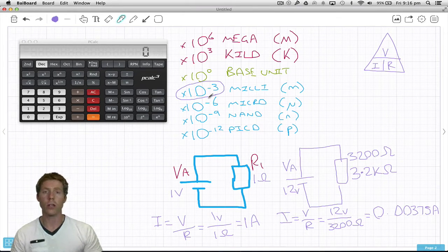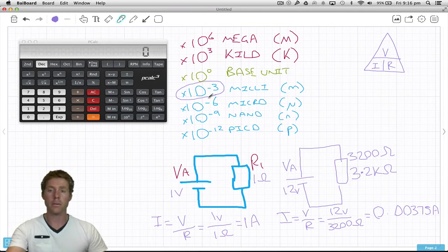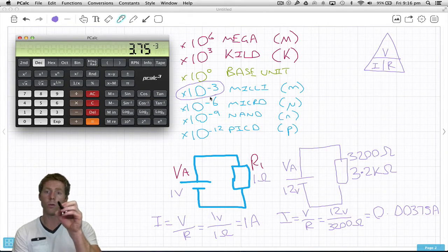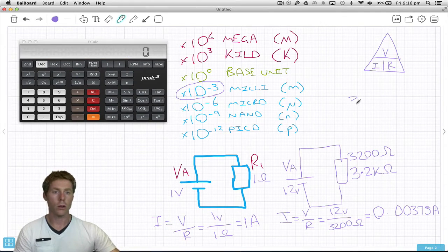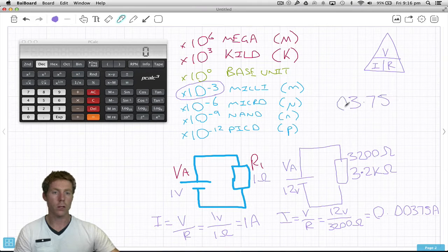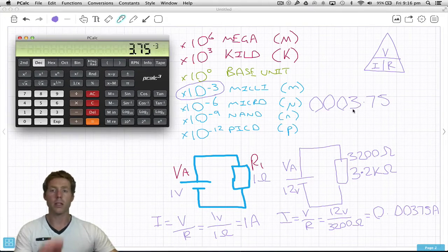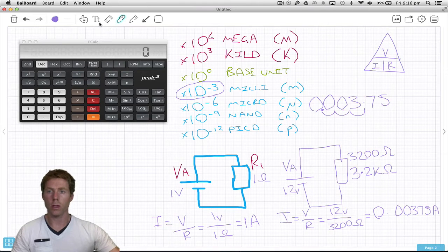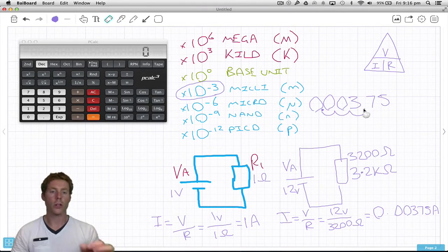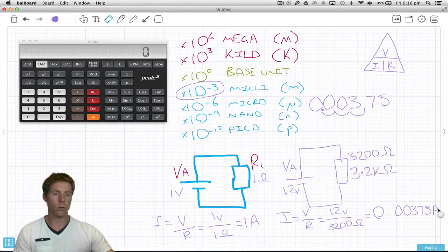The times 10 to the negative 3 means move the decimal place three spaces to the left. So 3.75, we're going to need to put a whole heap of zeros over here. Move it one, two, three, and that's your actual answer. It's 0.00375, which is exactly what we came up with.